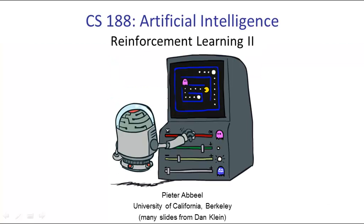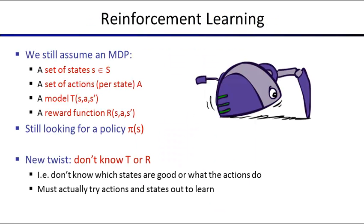Let's review MDPs and reinforcement learning. An MDP has states, a set of actions per state A, and a model. The model captures the probability of landing in state S prime at the next time, given that you were in state S and took action A. It's a three-dimensional table with numbers between 0 and 1.